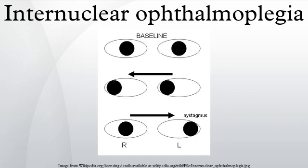Internuclear ophthalmoplegia is a disorder of conjugate lateral gaze in which the affected eye shows impairment of adduction. When an attempt is made to gaze contralaterally, the affected eye adducts minimally, if at all. The contralateral eye abducts, however with nystagmus.